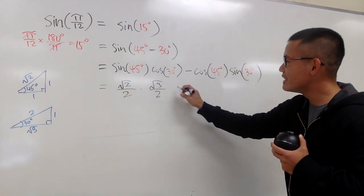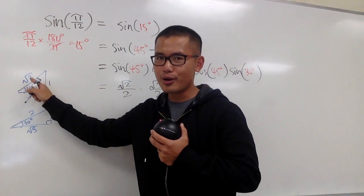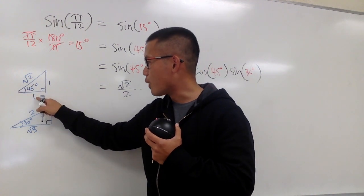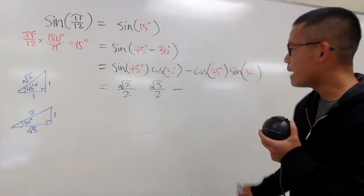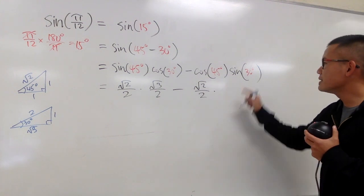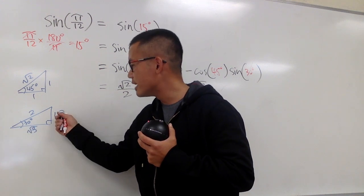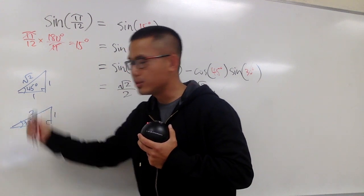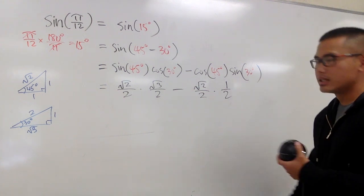And then minus cosine of 45. Look at this triangle. It's adjacent, which is 1, over hypotenuse, which is square root of 2. Rationalize the denominator, you get square root of 2 over 2, times sine of 30. Look at this triangle, opposite is 1, hypotenuse is 2. That is 1 over 2.